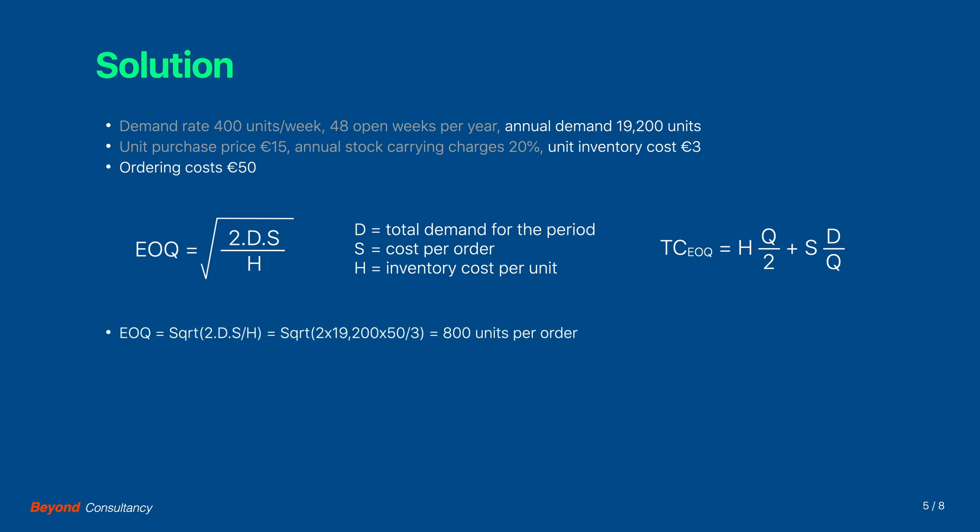We can input these into the economic order quantity formula and determine that the optimal order size is 800 units. From this we can derive that the ordering frequency is 24 orders per year, or inversely, that we have to place an order every two weeks.